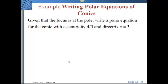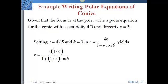Alright, let's put all this to use. We're going to write a polar equation of conics. If we're given that the focus is at the pole, which would be the origin, write a polar equation for the conic with eccentricity 4/5 and a directrix x equals 3. We want to start off with our equation, R equals KE over 1 plus E cosine theta. E is 4/5, K is 3. So we'll put the E and the K in the numerator and the E in the denominator. And we'll get 3 times 4/5 over 1 plus 4/5 cosine theta.